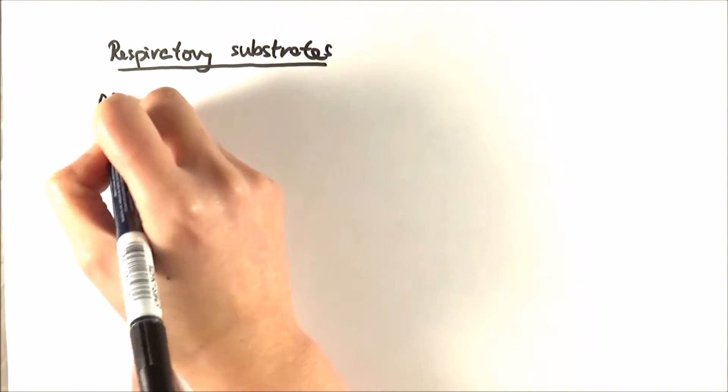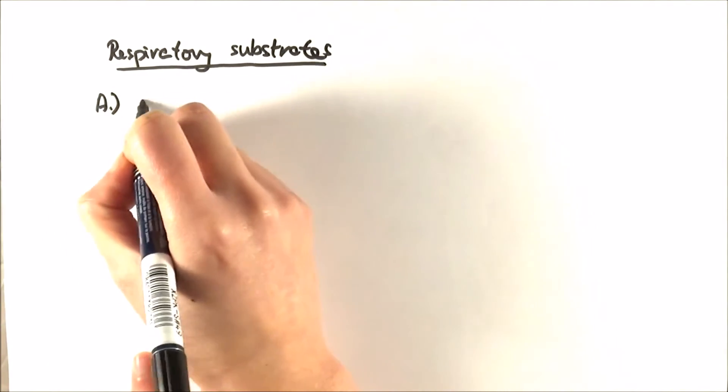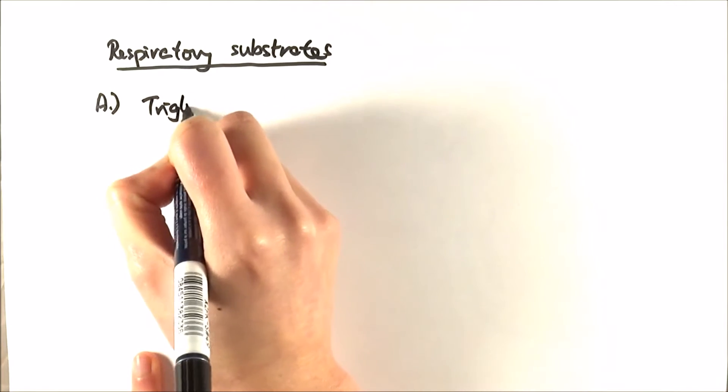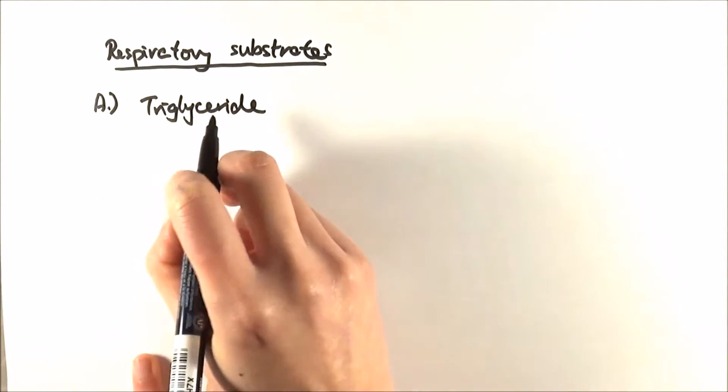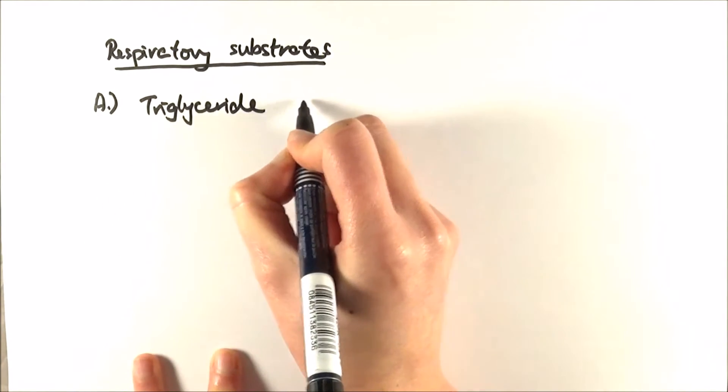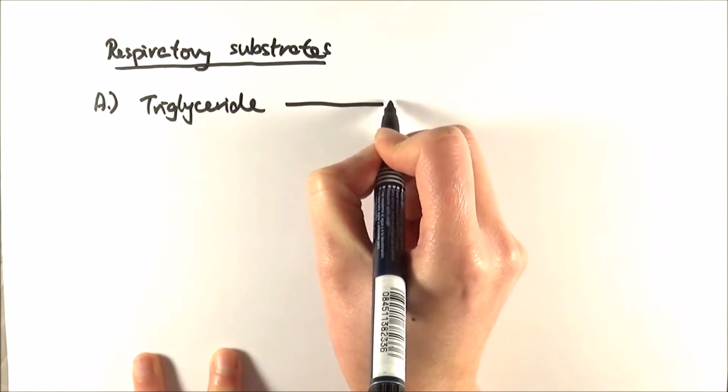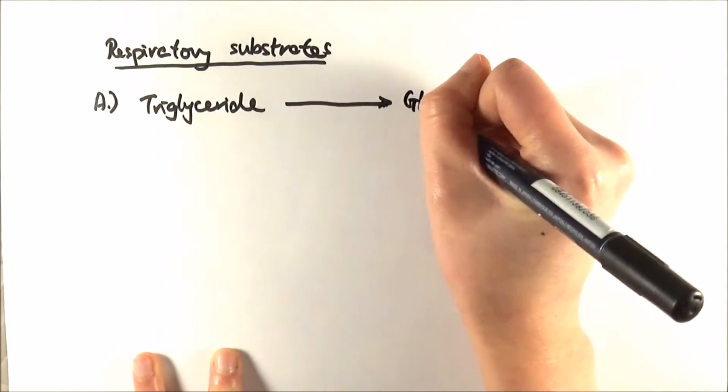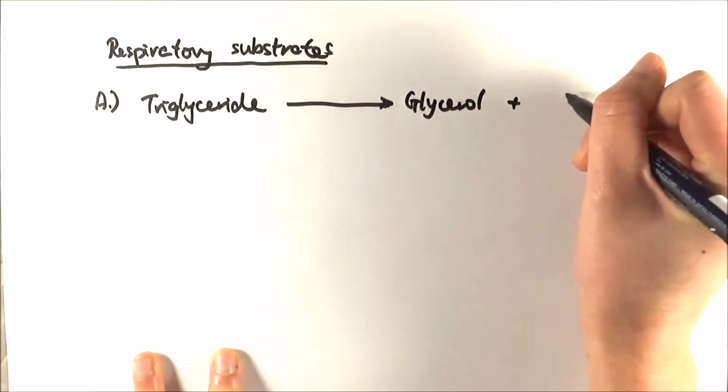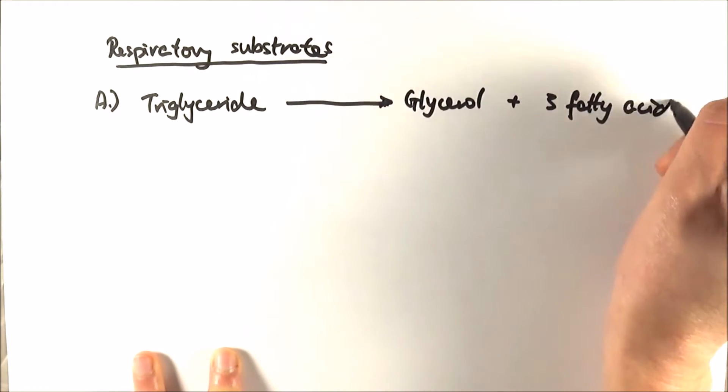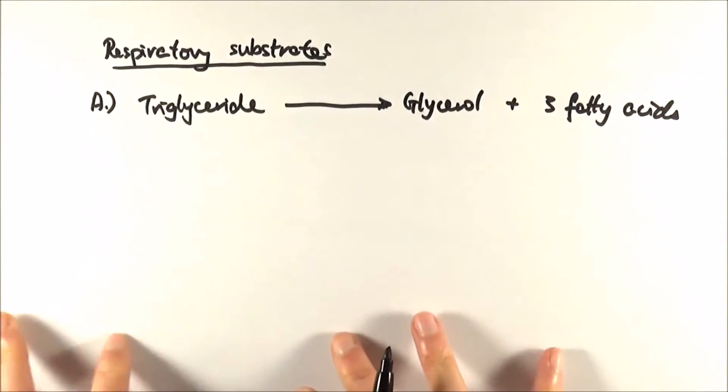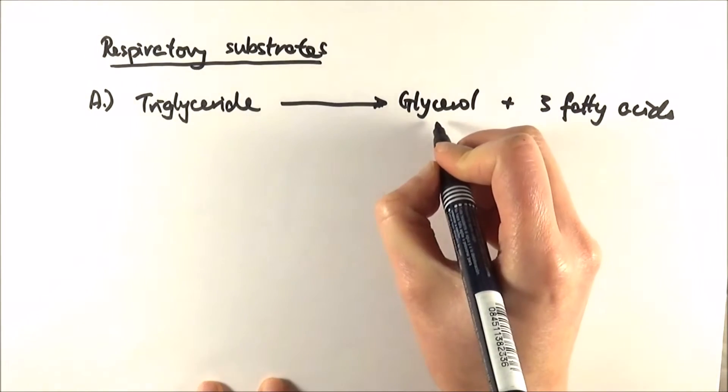Number one, we can actually use lipids—in this case we'll be thinking about triglycerides. From AS you would know triglyceride can be broken down to its constituents which are a glycerol molecule and three fatty acids, and they all actually find some way or another to enter the respiration process.